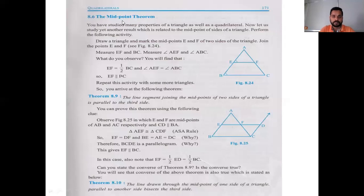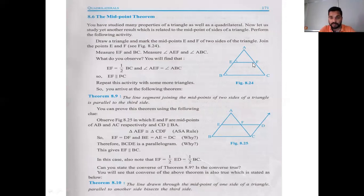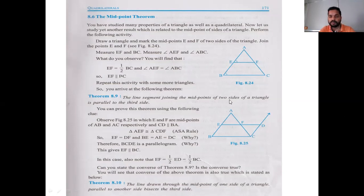This is section 8.2, starting from Theorem 8.9: the line segment joining the midpoints of two sides of a triangle is parallel to the third side. If ABC is a triangle and E and F are the midpoints of two sides, then EF will be parallel to BC. Joining E and F forms a line parallel to BC.